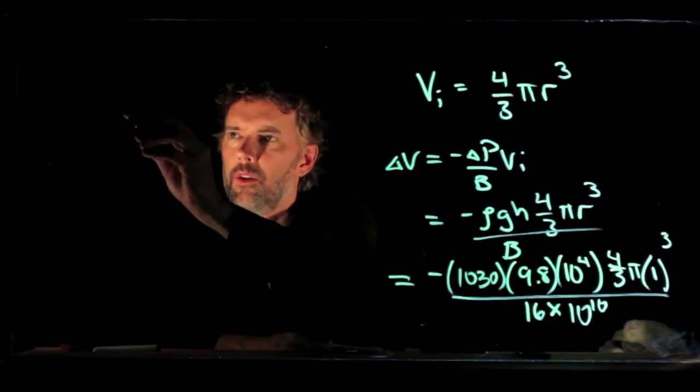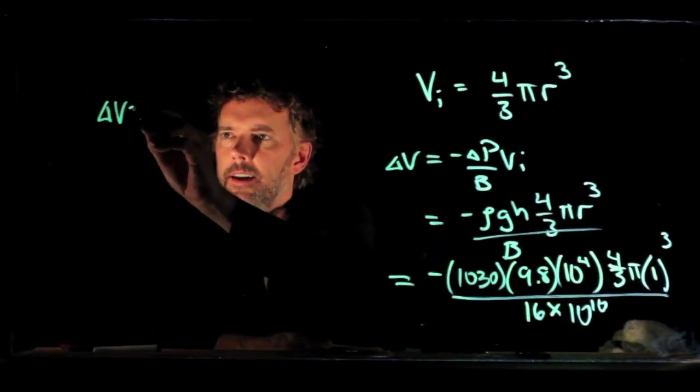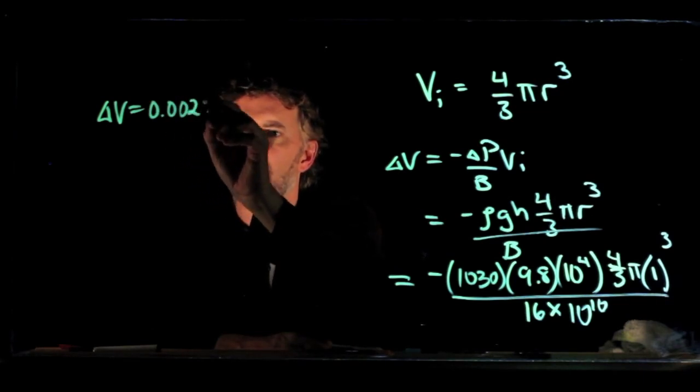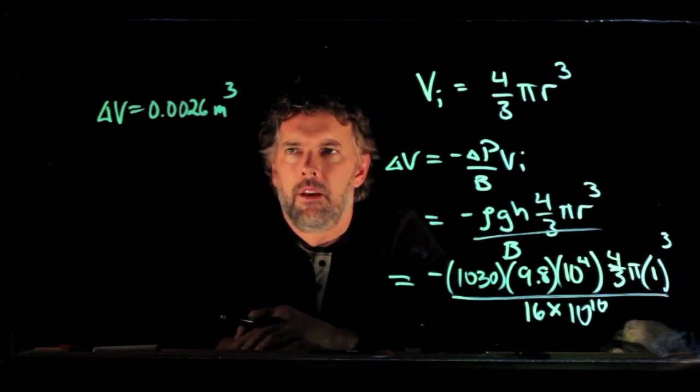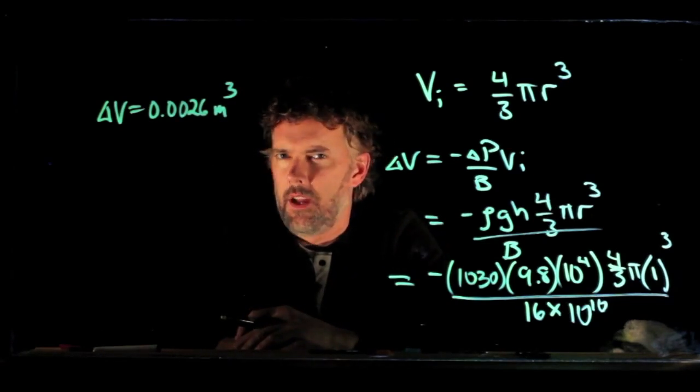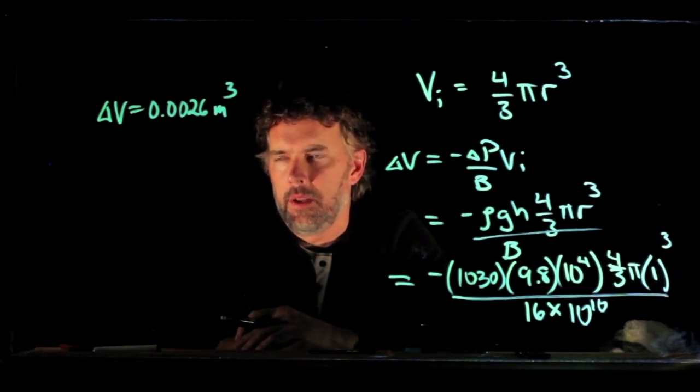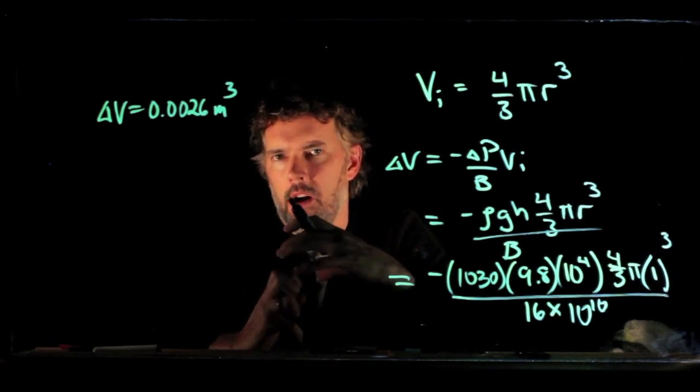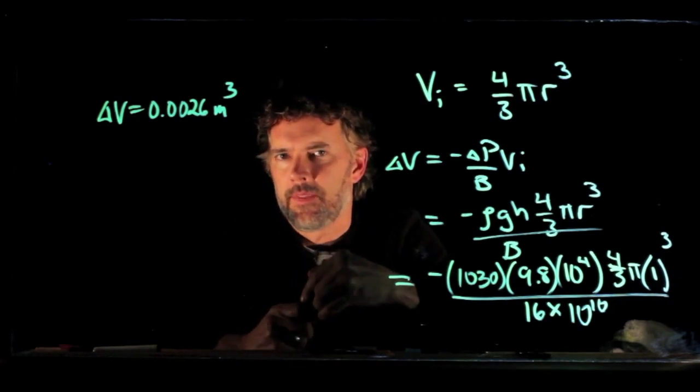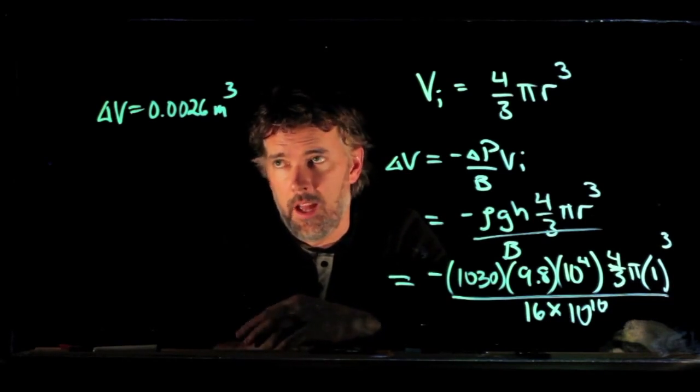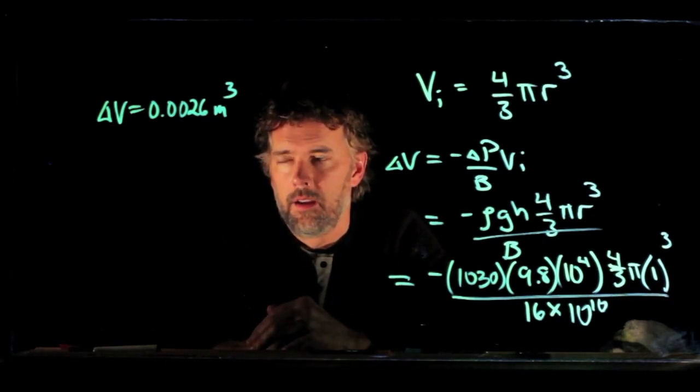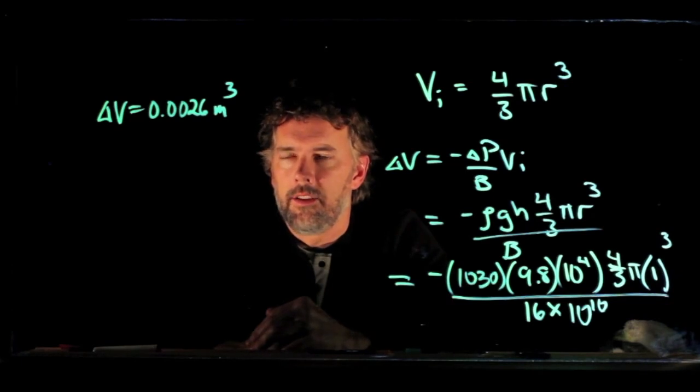Okay, so if you run those numbers you should get a ΔV of 0.0026 cubic meters, which doesn't sound like a whole lot. But that's because we started with a solid steel sphere. If you start with something that is hollow, say a submarine, then ΔV can in fact be a significant amount of change in the radius of that submarine.